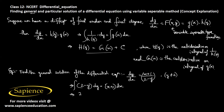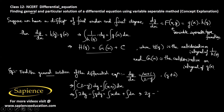We integrate both sides since we need the general solution. This gives: integral of 2 dy minus integral of y dy equals integral of x dx plus integral of dx. So 2y minus y²/2 equals x²/2 plus x plus some arbitrary constant c₁.